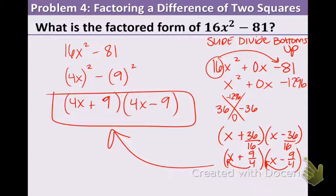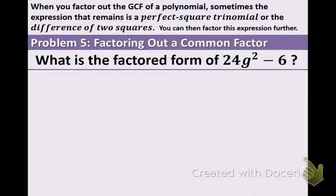Alright, stick with me. We're almost done. Now, we're going to have to factor out a number. When you factor out the GCF of a polynomial, sometimes the expression that remains is a perfect square trinomial or the difference of two squares, which is exactly what we've done in this section. Then we can factor the expression to get our final answer.